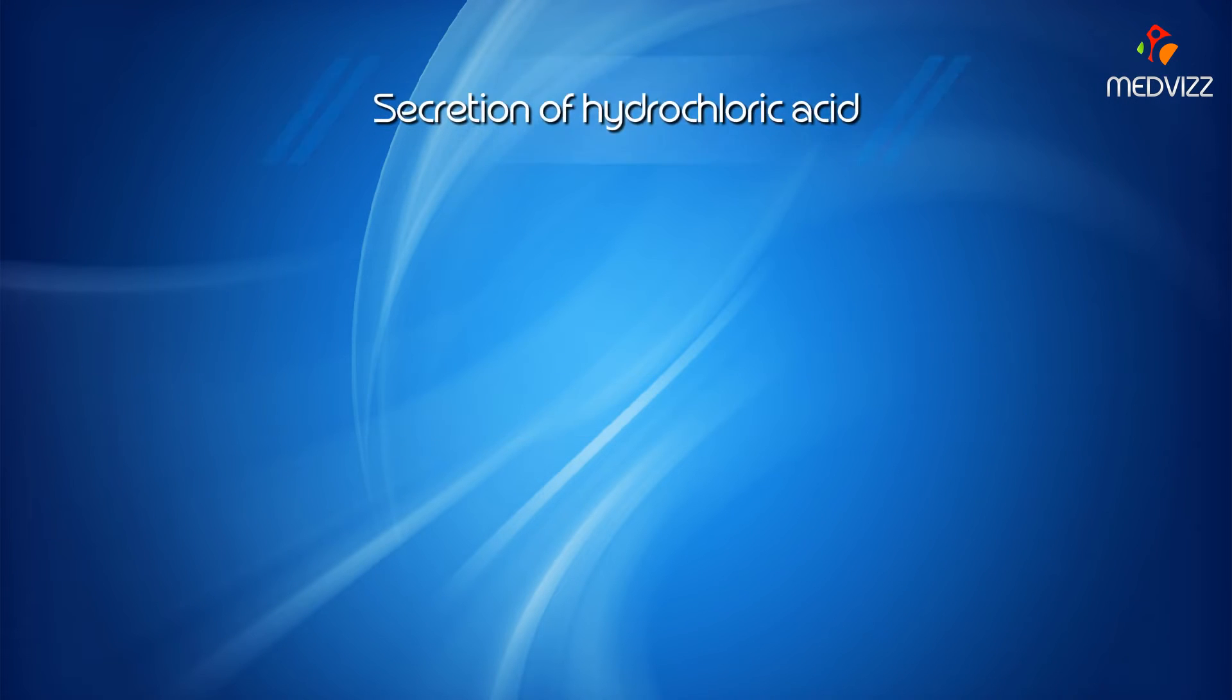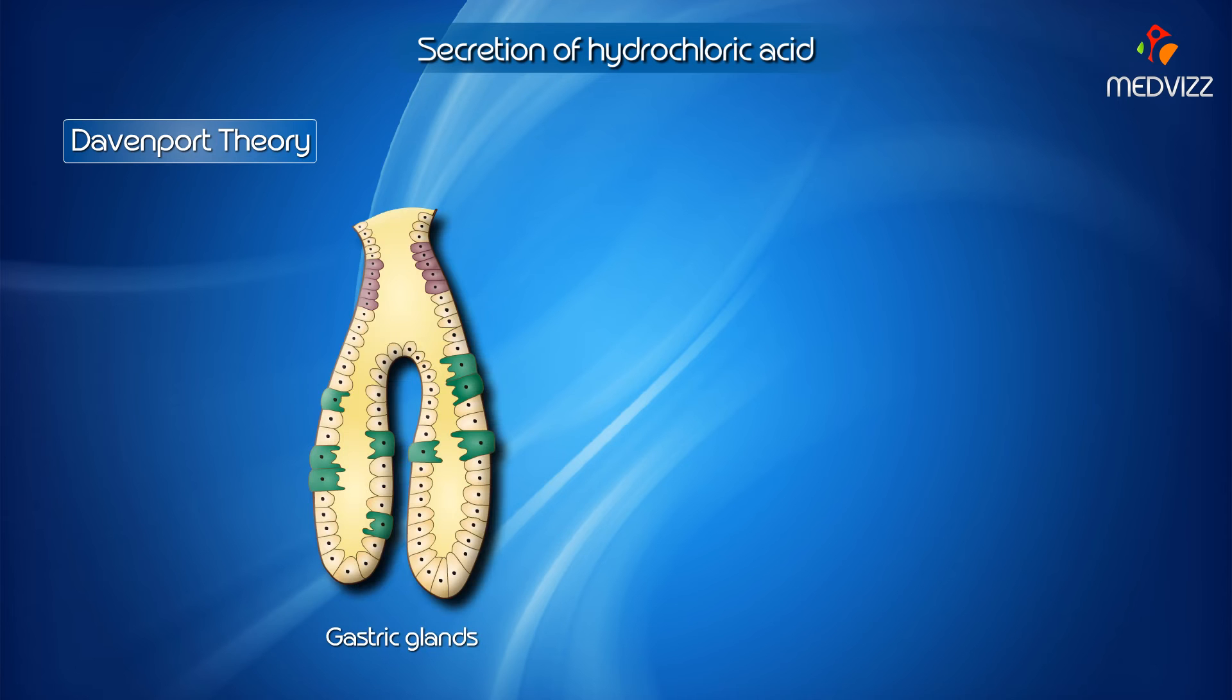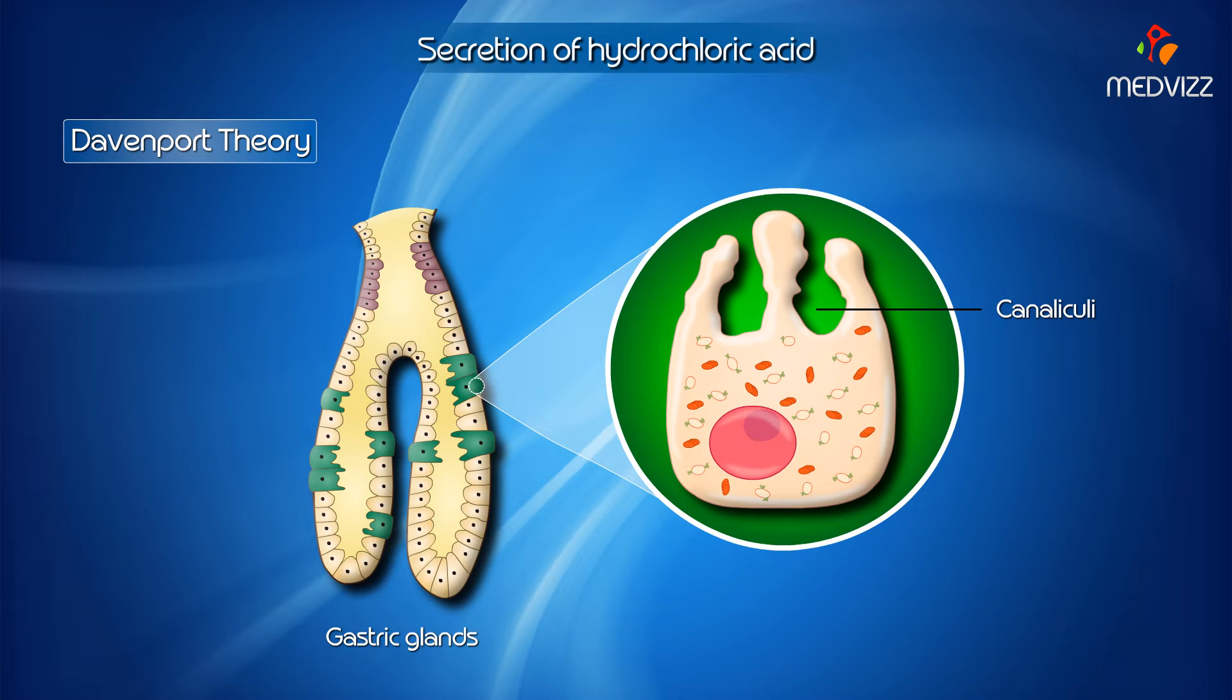Secretion of Hydrochloric Acid - Davenport Theory. Hydrochloric acid secretion takes place in the canaliculi of the parietal cells in gastric glands.